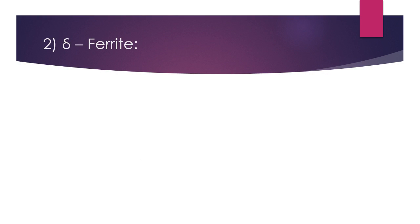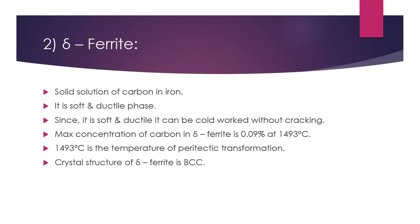The next phase is the Delta ferrite phase. It is the solid solution of carbon in iron. It is a soft and ductile phase, so it can be cold worked without cracking. The maximum concentration of carbon in the Delta ferrite phase is 0.09% at 1493°C, which is the temperature of peritectic transformation. The crystal structure of Delta ferrite is body-centered cubic (BCC).